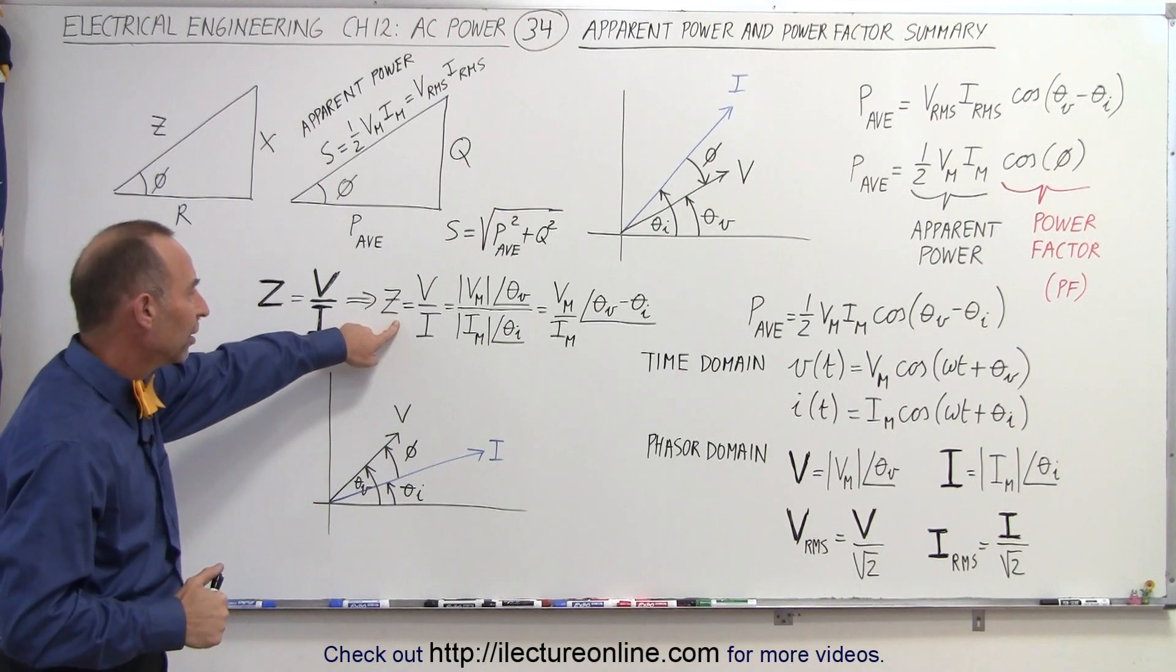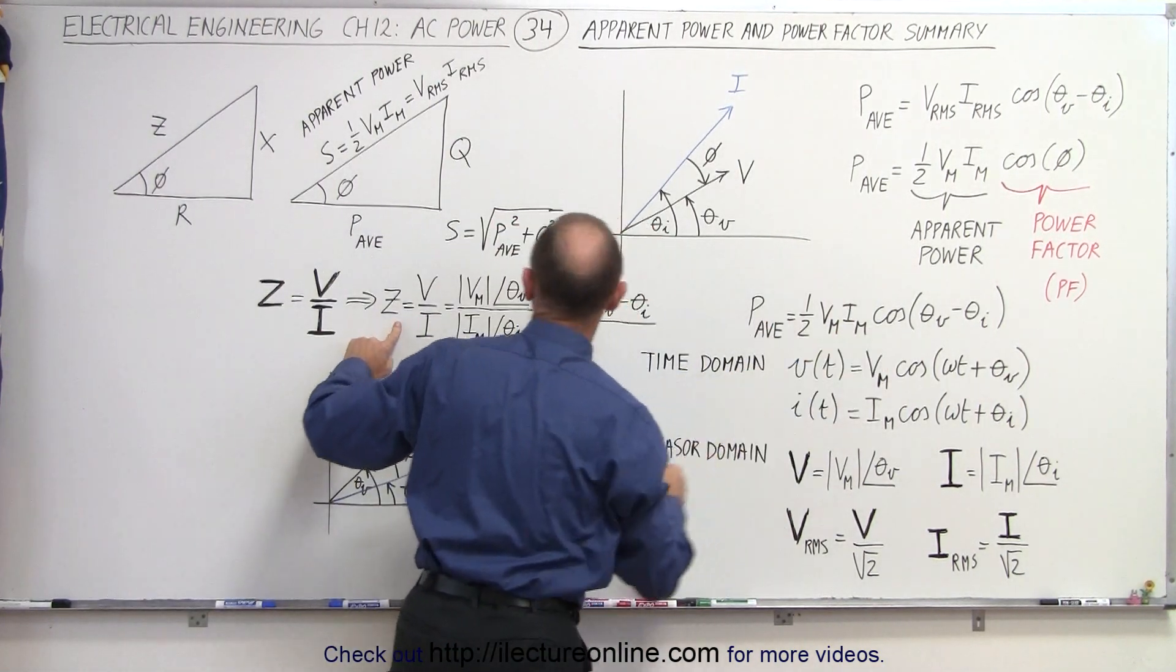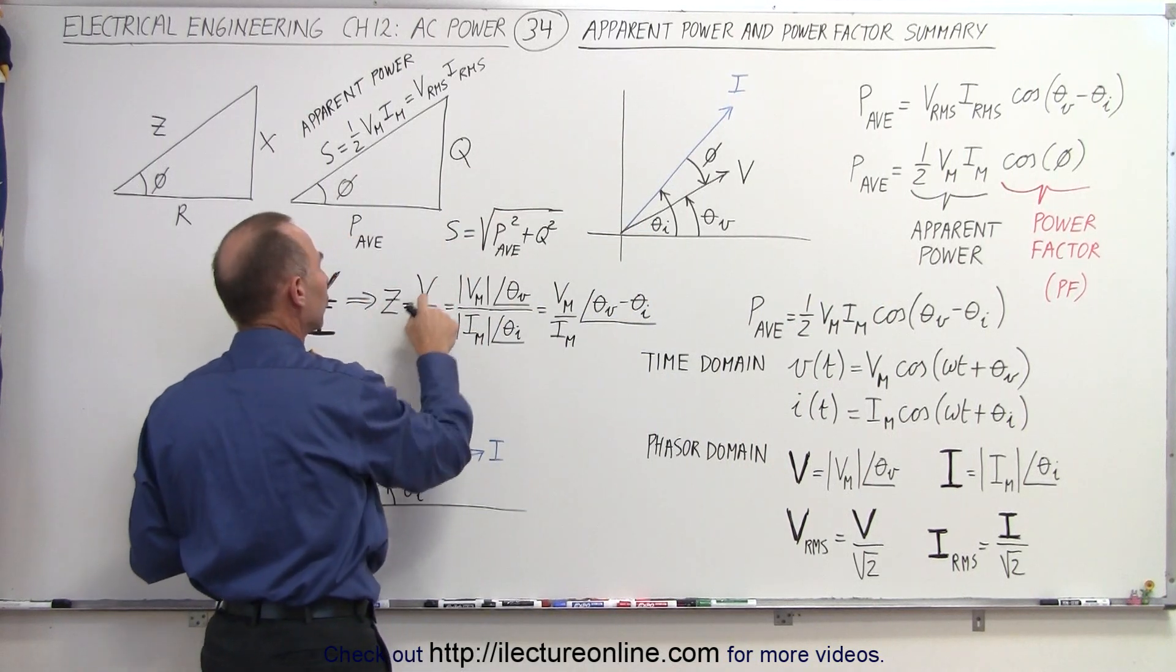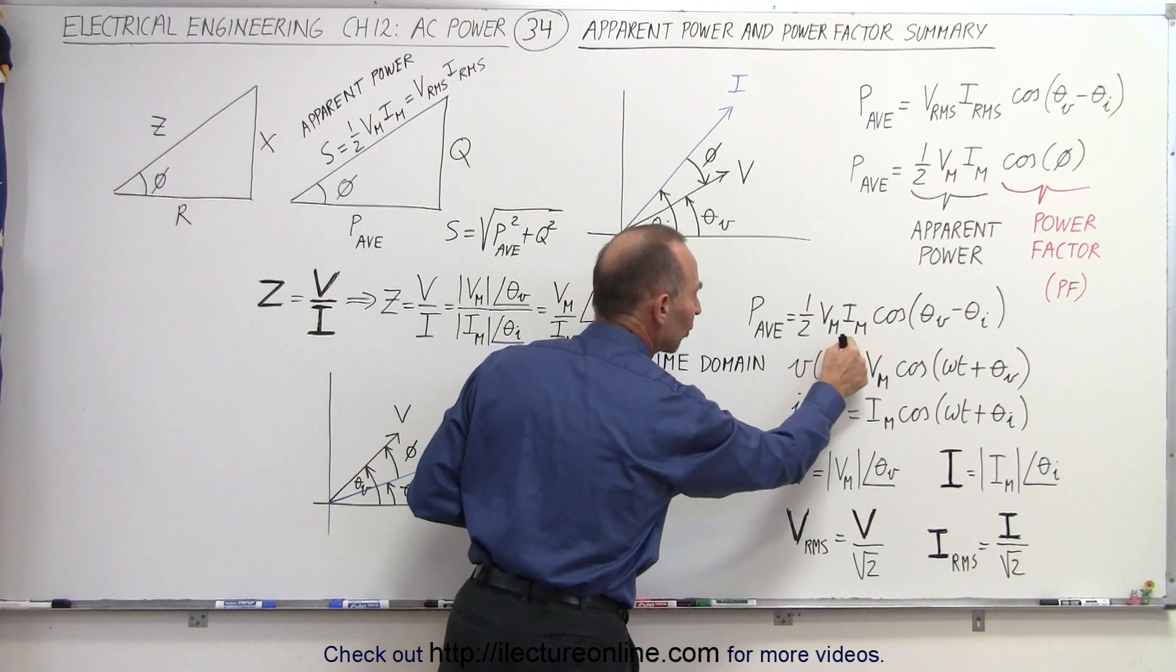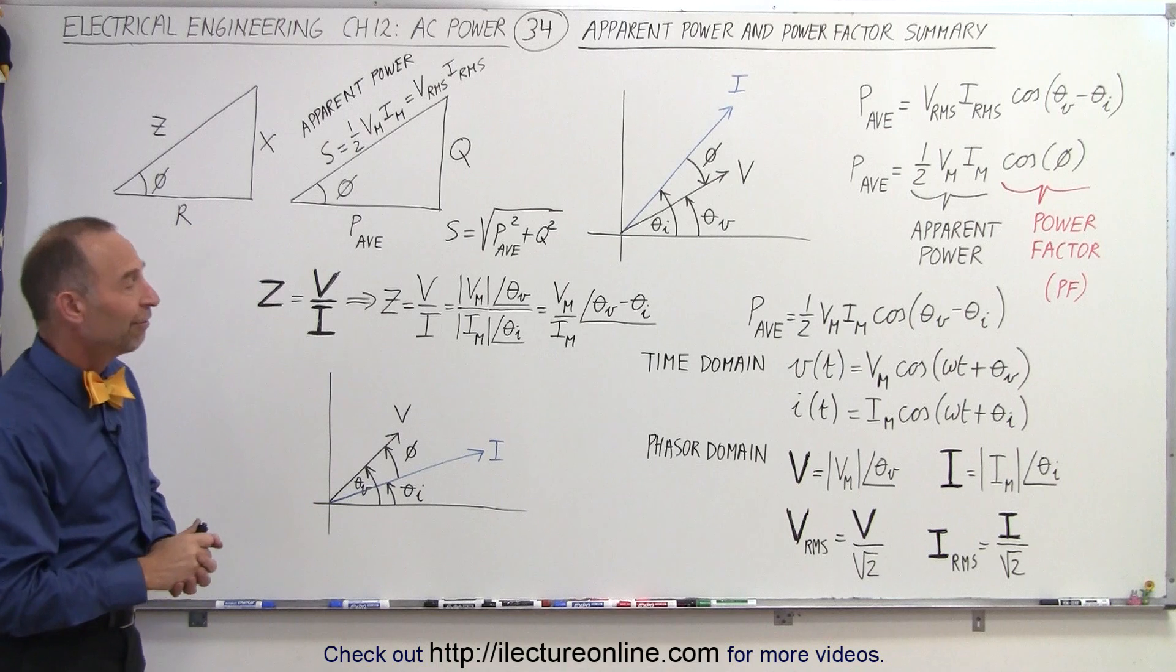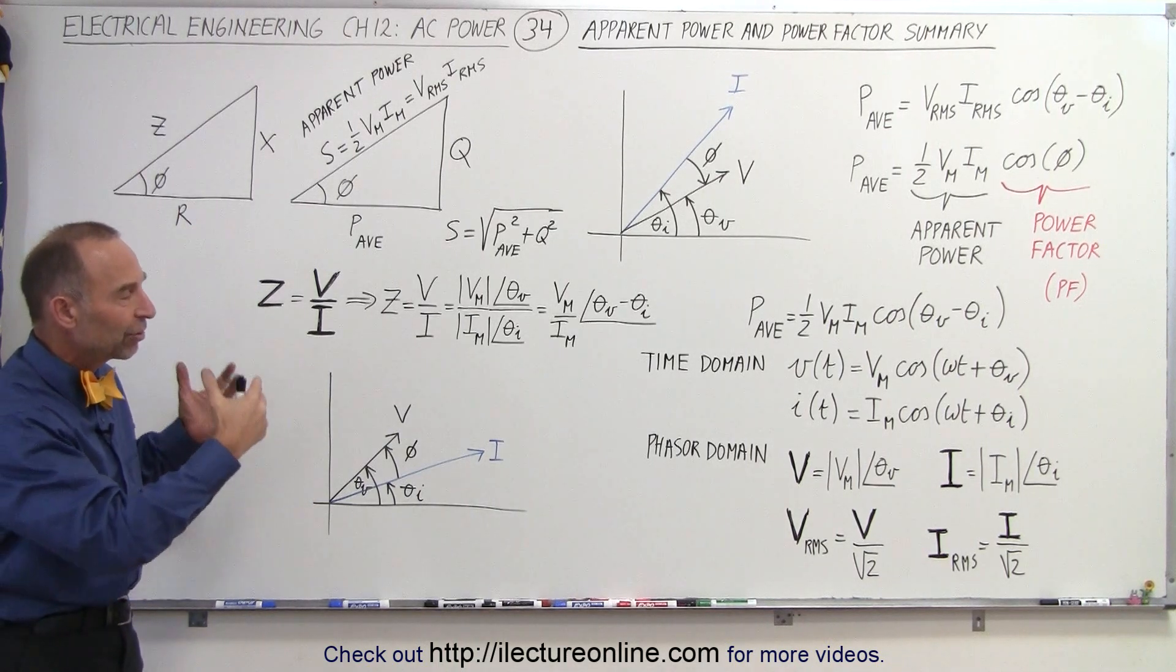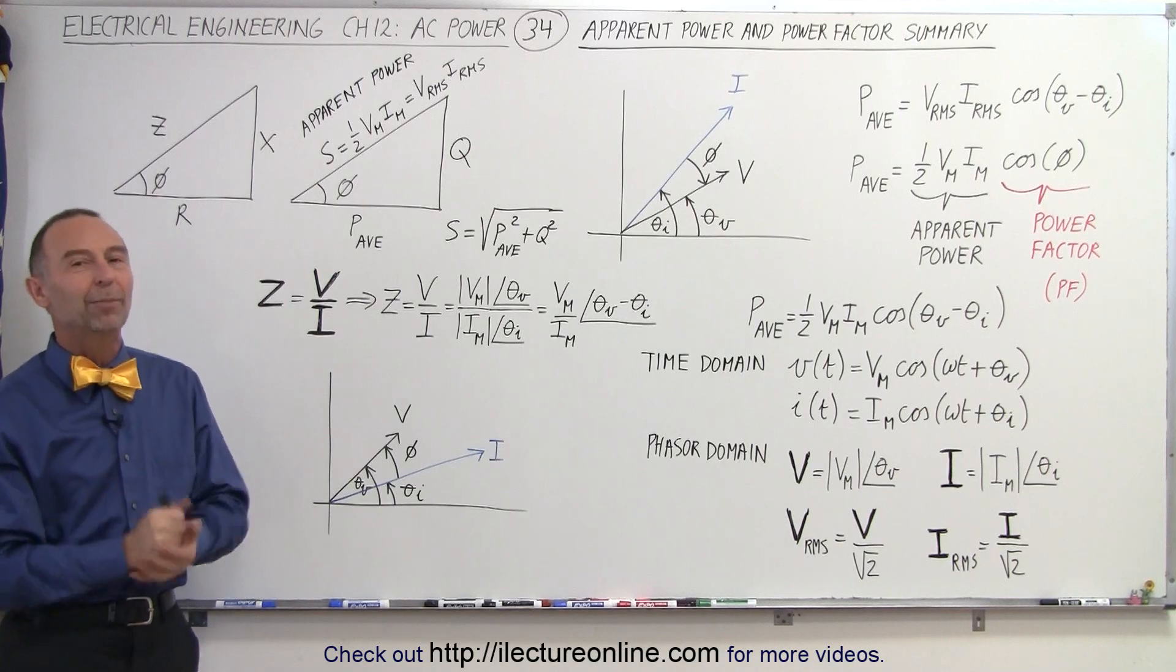And so this is how we're going to figure out everything we need to know about power in various forms. And so we need to understand the impedance and how that then leads into the average power. Notice since the impedance is a function of the voltage and the current, and since the power is a function of the voltage and the current, we can then relate these two to one another, and we're going to see some examples of how to do that. And so that pretty well summarizes what we need to know about the apparent power and the power factor.